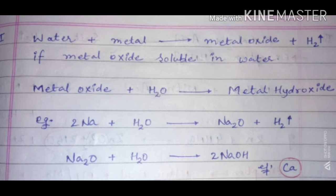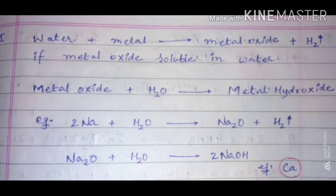For example, sodium reacts with water and forms sodium oxide and hydrogen gas. Then sodium oxide reacts with water and forms sodium hydroxide. This reaction takes place because the oxide of sodium is soluble in water.